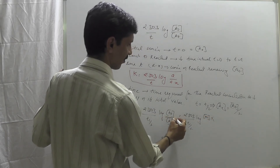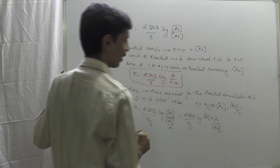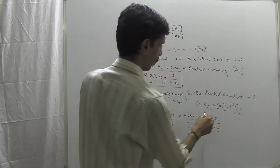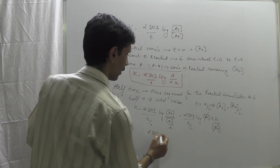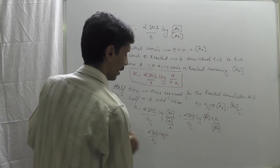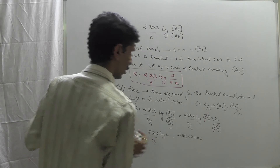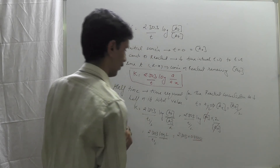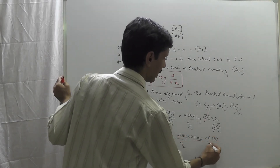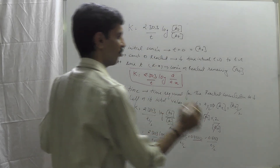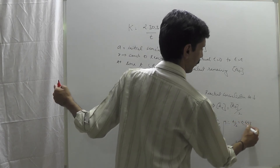Simplifying the log term: log(A0 / (A0/2)) equals log(2), since A0 cancels. Therefore K equals 2.303 × log 2 upon T half, which equals 2.303 × 0.3010 upon T half, giving K equals 0.693 upon T half. Therefore T half equals 0.693 upon K.